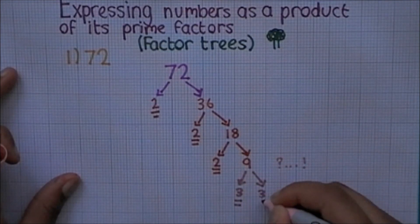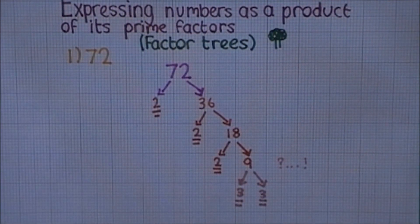3 will work. So that's 3 and 3, which are both primes, and factors of 9, which we can underline, and which complete our tree.